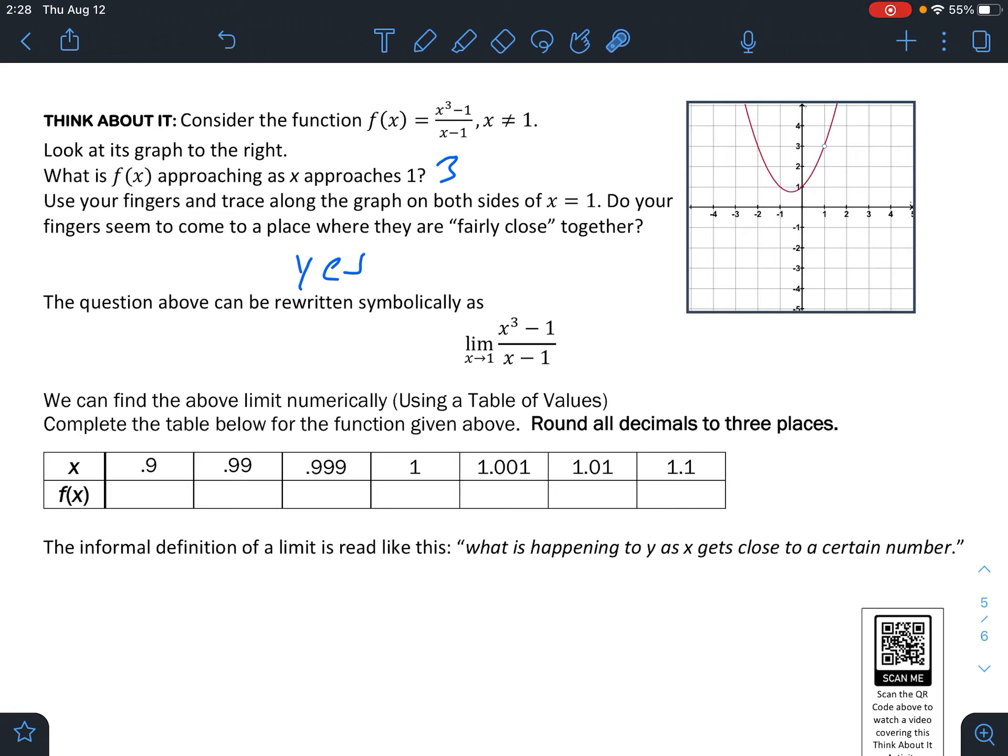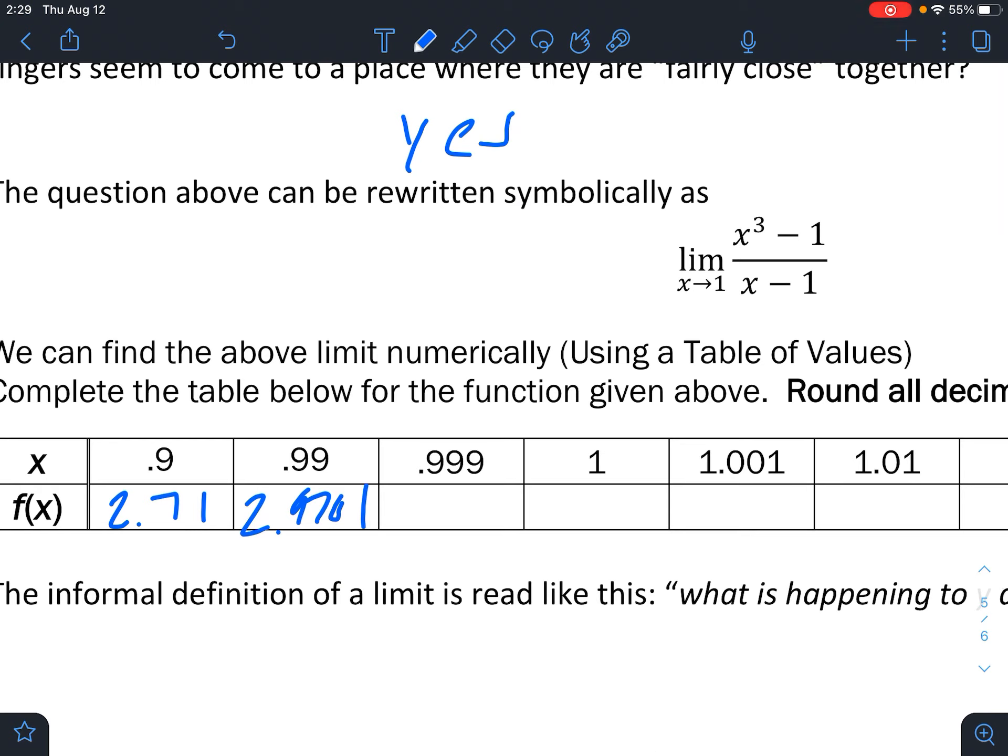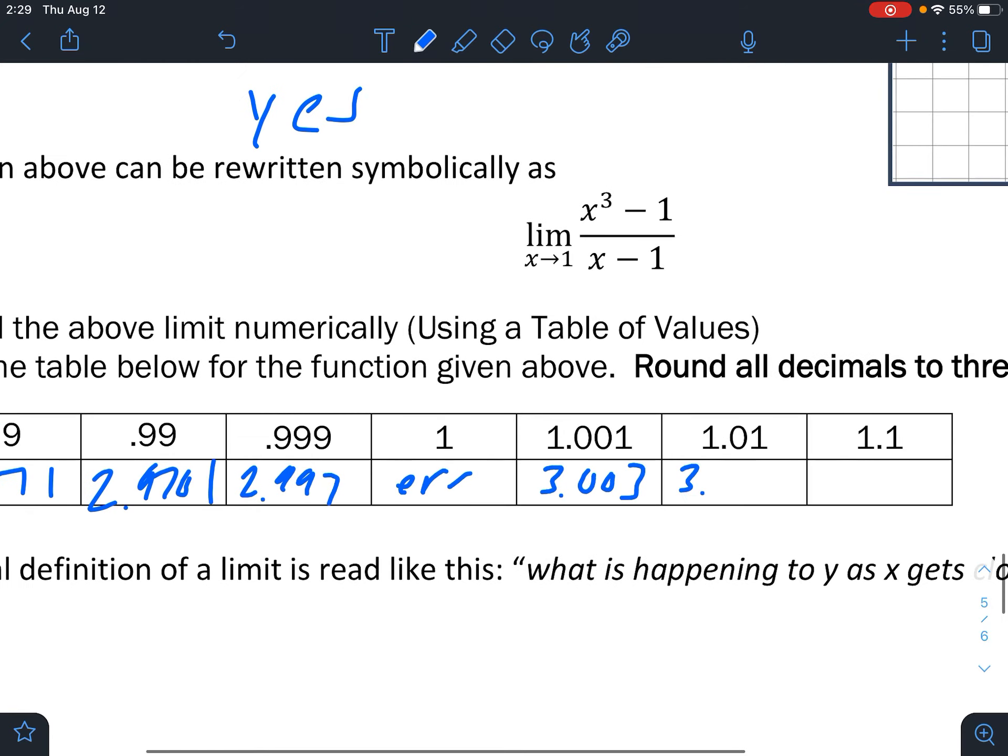So we're going to use a table. In your graphing calculator, go ahead and type in that function into y1. And I'll be doing the same. Go to table set and make sure your independent variable is set to ask mode. Then go to table and start typing these numbers in. So type in 0.9, we get 2.71, 0.99, 2.9701, 0.999, we get 2.997. If you type in 1, you're going to get an error. 1.001, 3.003, 1.01, 3.0301, and 1.1, you get 3.31.